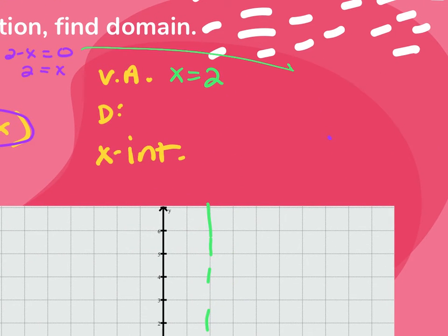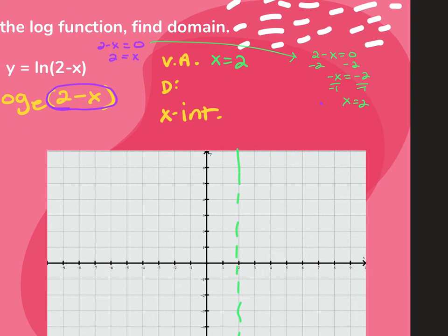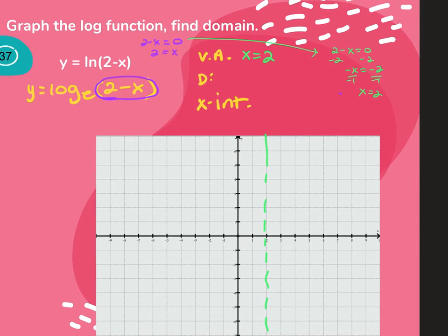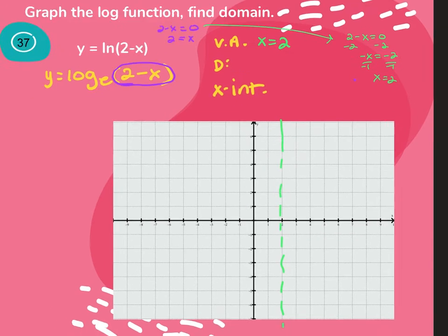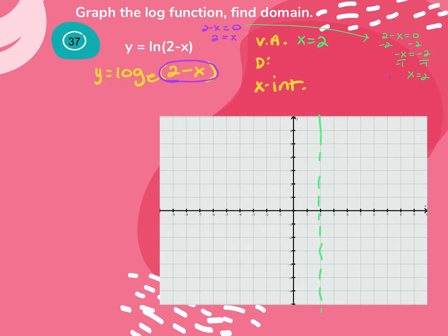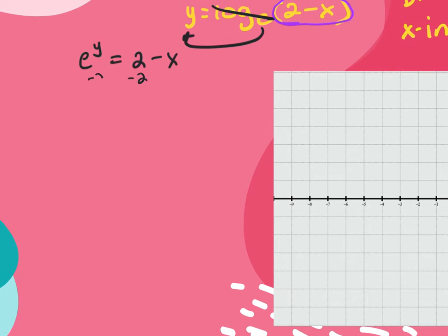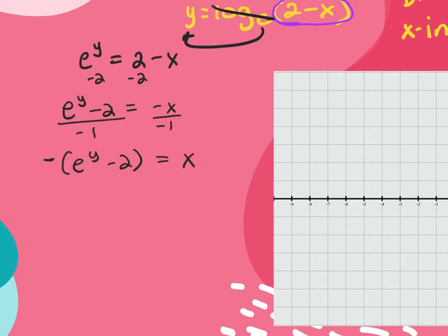I don't know if the graph is on the right or left until I start plugging in points. I'll take log base e of (2 minus x) and convert it to exponential: e to the y equals 2 minus x. To solve for x: e to the y minus 2 equals negative x. Then multiply everything by negative 1 to get x equals negative e to the y plus 2.